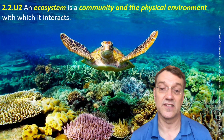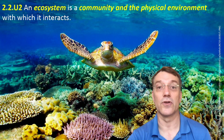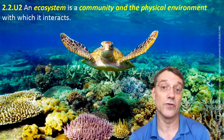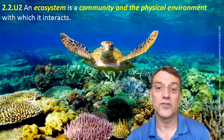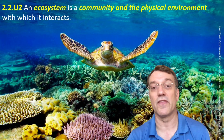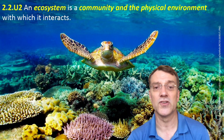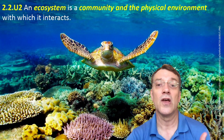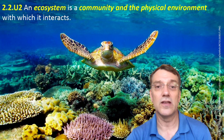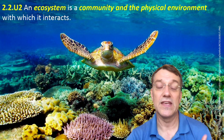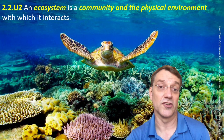An ecosystem takes this concept even further by including both the community and the physical environment with which those communities interact. This coral reef ecosystem includes not just the turtle, the fish, and the coral organisms, but also the water, the sunlight, the ocean currents, and the density of salt in the water — all of those things shape the existence of the organisms that live there.